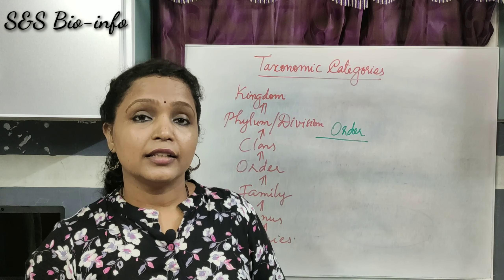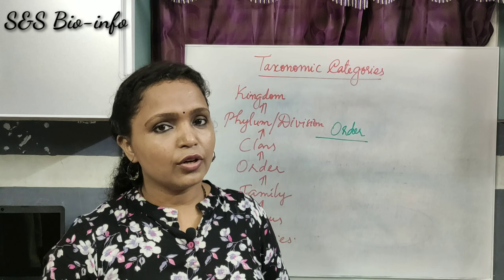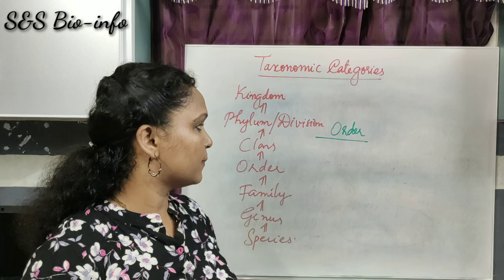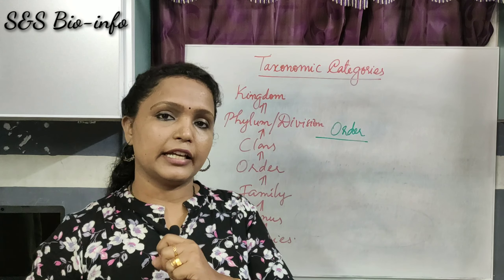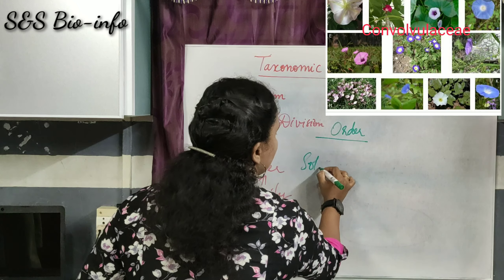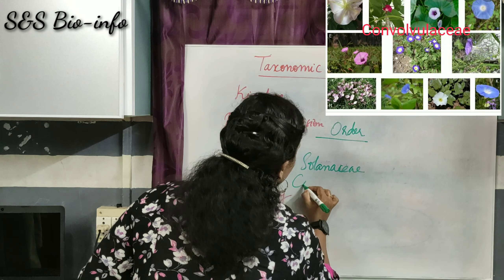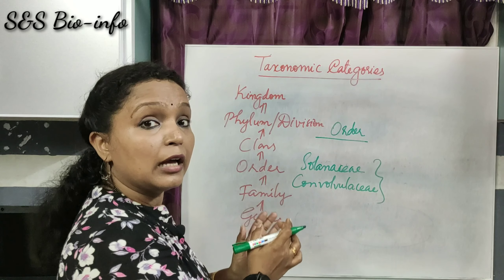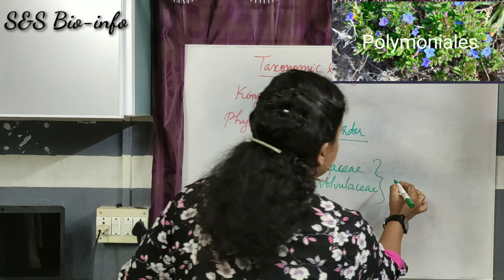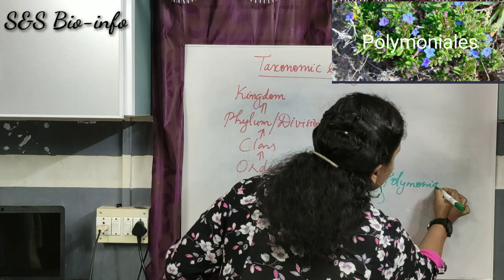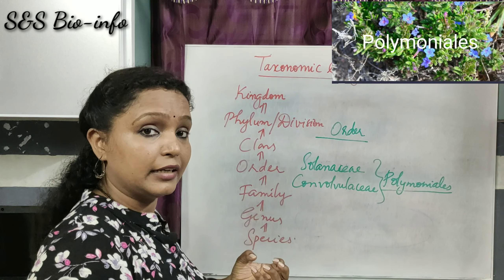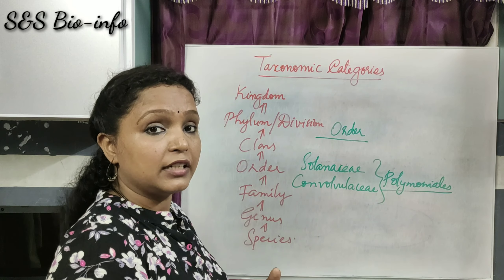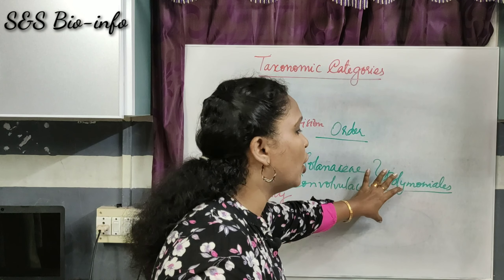When it goes to a higher category, the similarities decrease and the differences increase. The order comprises a group of related families but they also have some basic differences. For example, the families Solanaceae and Convolvulaceae are two families of flowering plants that come under the same order Polemoniales, because they have some similarities in their floral pattern or floral development.